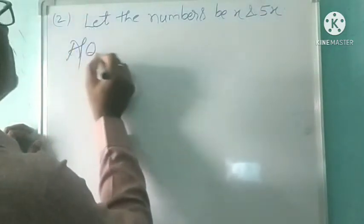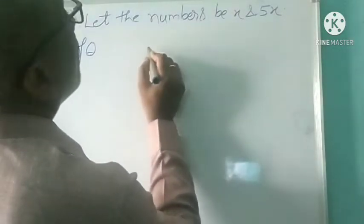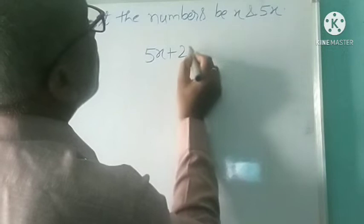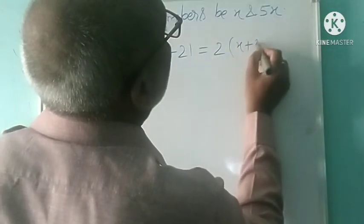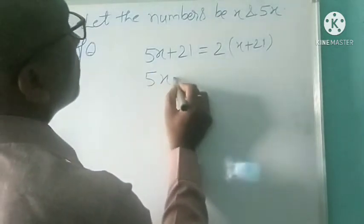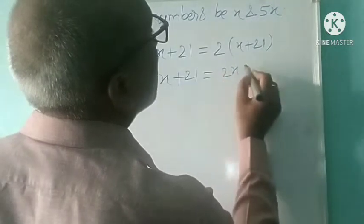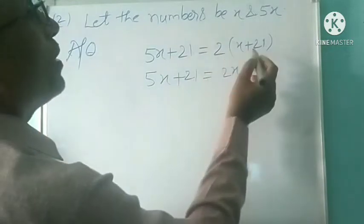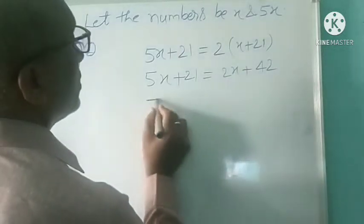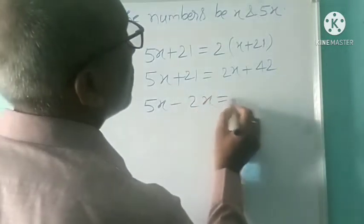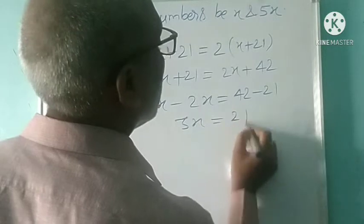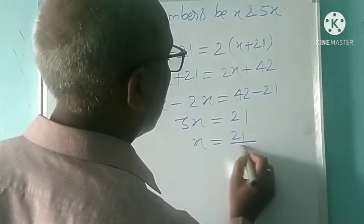According to the question, 5x plus 21 is equal to 2 bracket x plus 21. Then 5x plus 21 is equal to 2x plus 42. When you open the bracket, you multiply 2 into x plus 21 to get 2x plus 42. Then you transpose: 3x is equal to 21, so x is equal to 21 upon 3, which is 7.